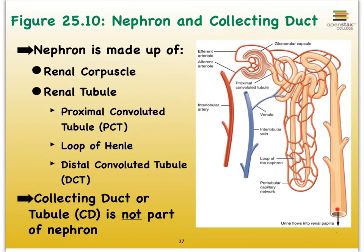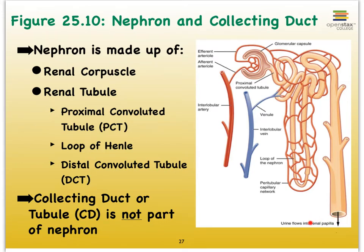This portion here that I'm pointing to right now is not part of a nephron. Notice that there are many nephrons that feed into this tube, and therefore we refer to it as the collecting duct or the collecting tube. This is not part of the nephron because it collects urine from many different nephrons. Eventually this collecting duct becomes part of the pyramids, and where the pyramids form a point, that opening is called the renal papilla, which then drains into the calyces.